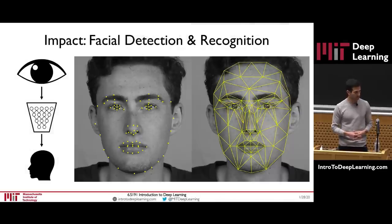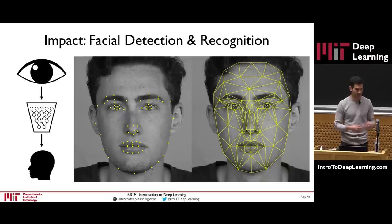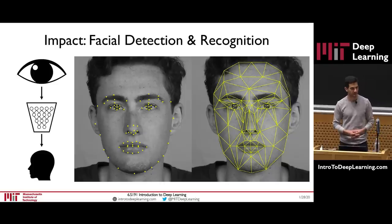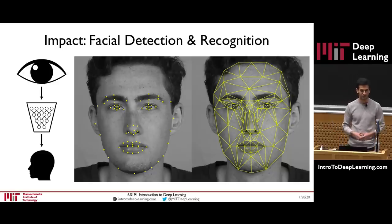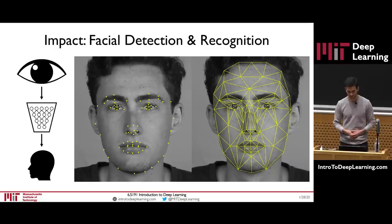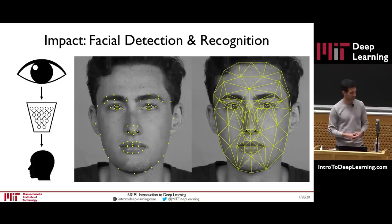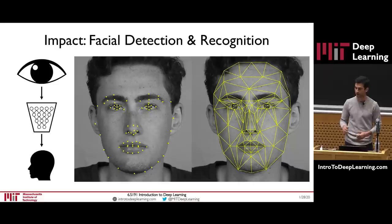One example of how deep learning is transforming computer vision is facial recognition. You can see an icon of the human eye, which visually represents vision coming into a deep neural network in the form of images, pixels, or video. Deep learning has transformed this field because the creator of this AI does not need to tailor the algorithm specifically towards facial detection; instead, they can provide lots of data and swap out the output for many other detection or recognition types.